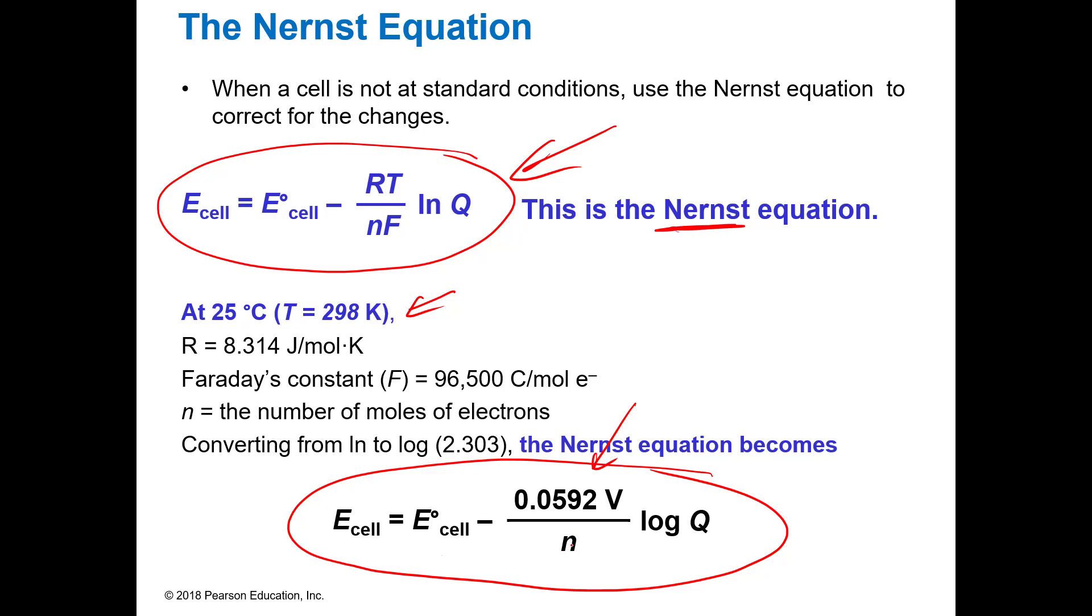Remember me showing you in previous lessons how to figure out how many electrons if you've got a balanced chemical equation. And then you take the log of Q, which Q is basically the equilibrium expression or dissociation expression.